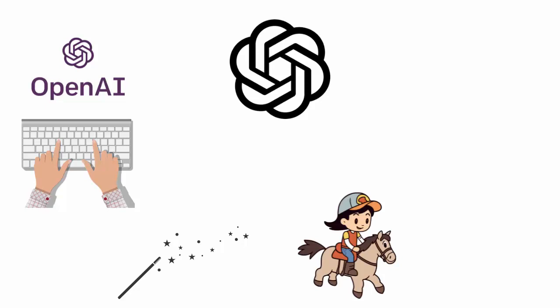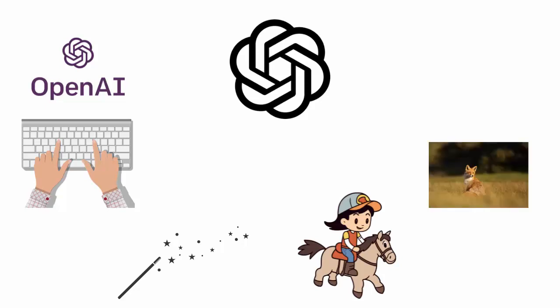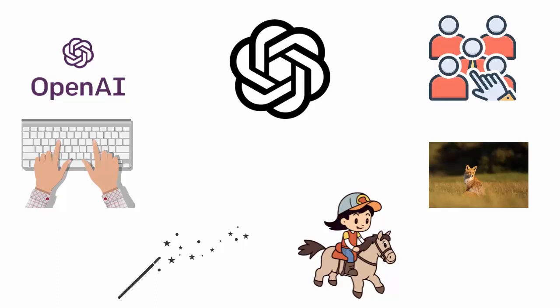An astronaut riding a horse in photorealistic style. A fox sitting in a field in the style of Claude Monet. It's that smart. And the best thing — anyone can play around with it.